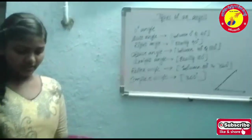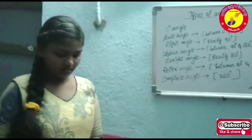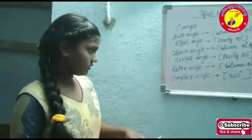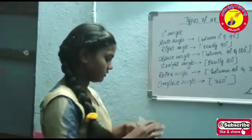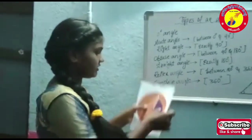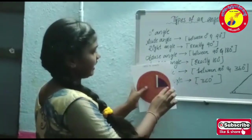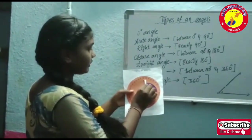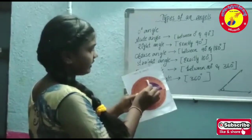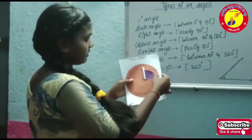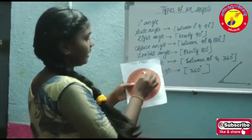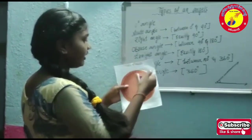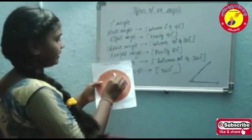Now I will show examples of angles. First one is the zero degree angle. Next is the acute angle — angles from 0 to 90 degrees are all called acute angles.